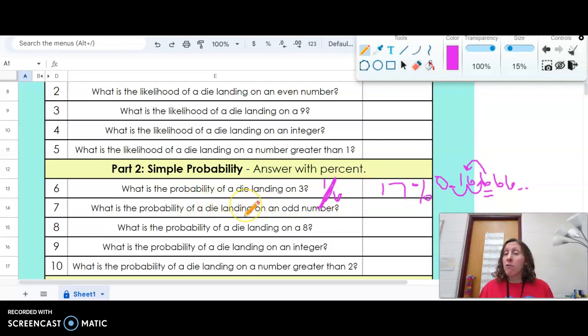So for all of these, get your fraction, do top divided by bottom, then move the decimal two to the right.